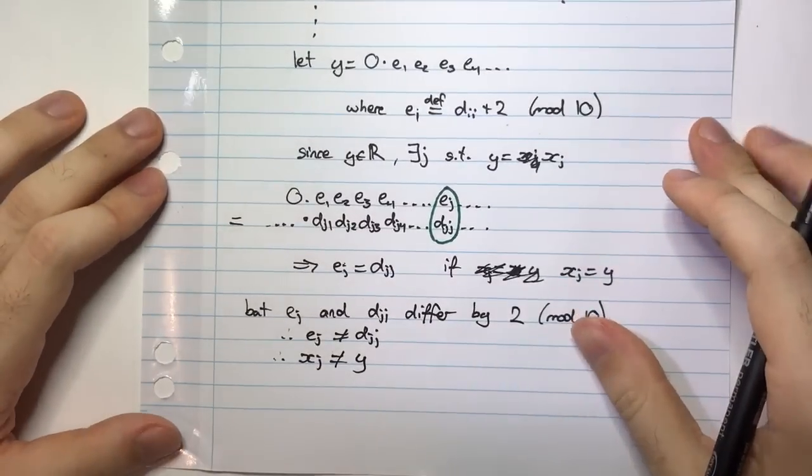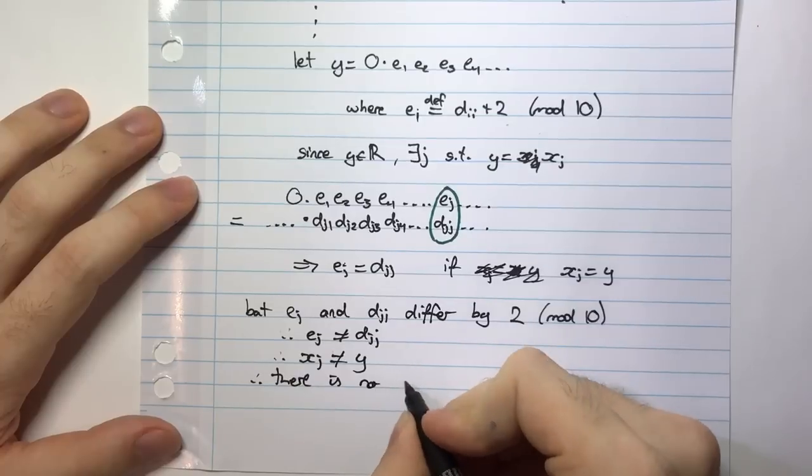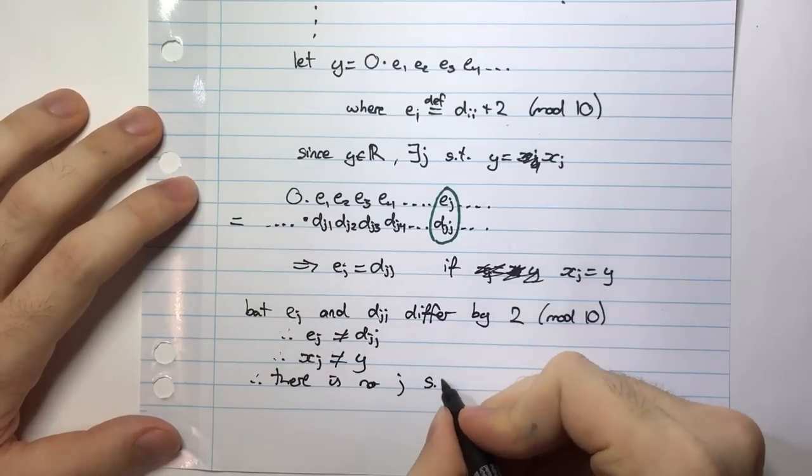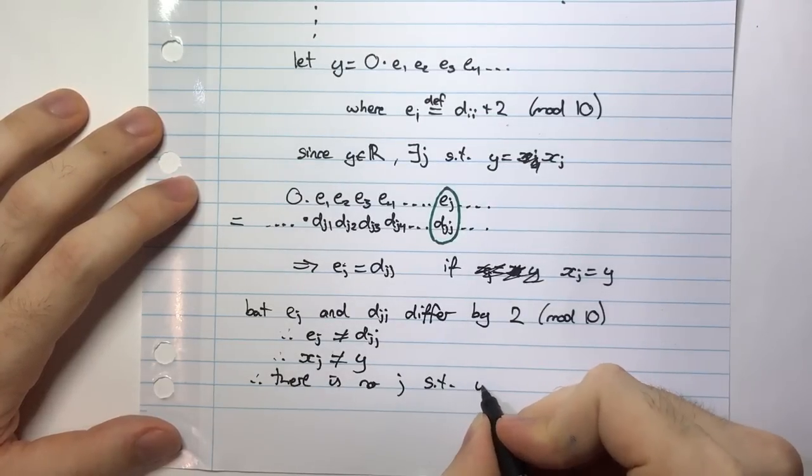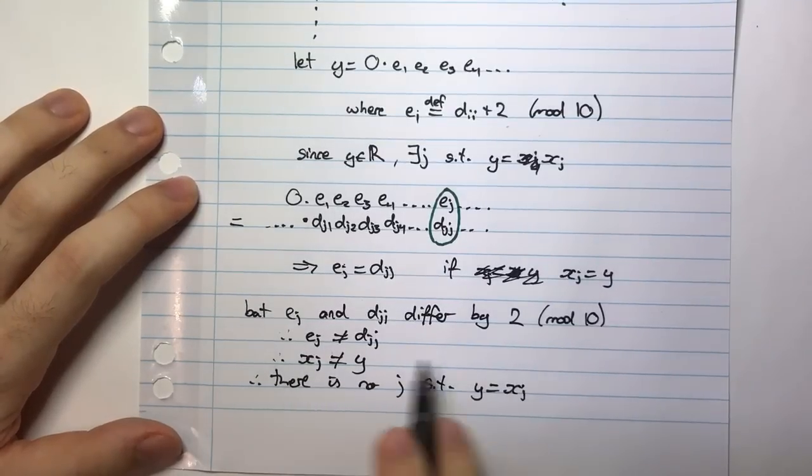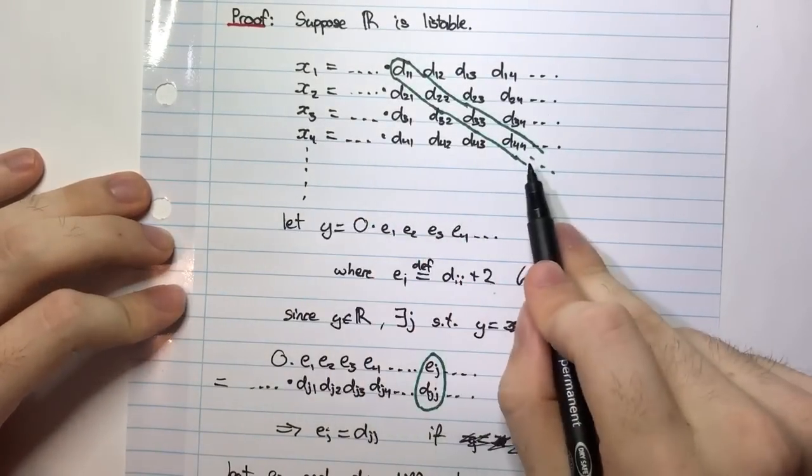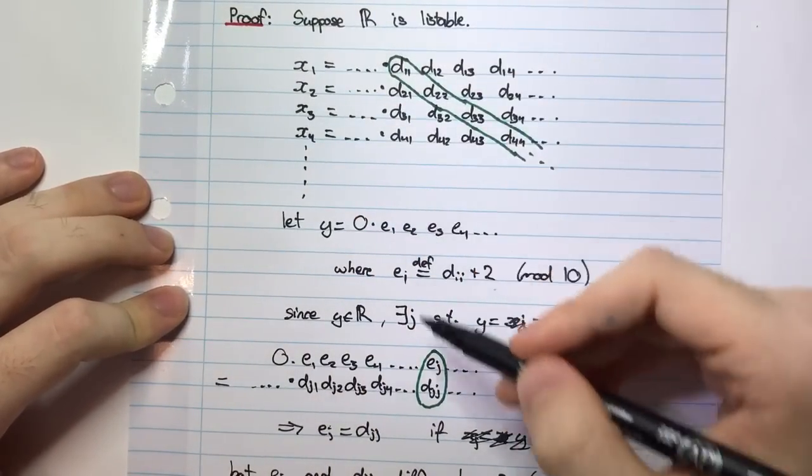So what does that mean? That means, therefore, there is no number J such that Y is equal to XJ. So what does this thing mean? This is just another way of saying that there is no number here that corresponds to Y. That means Y is not in this list.